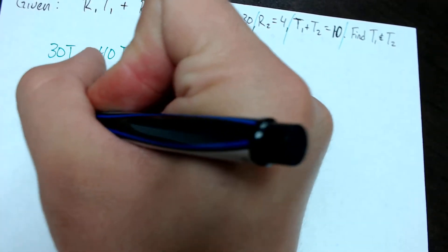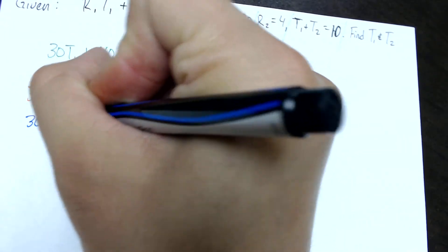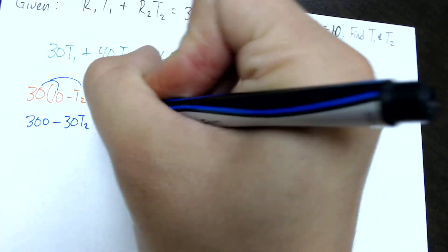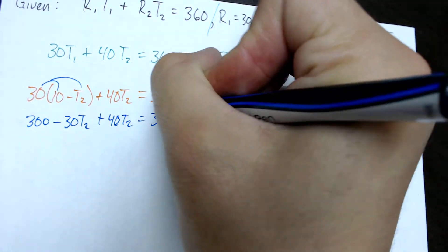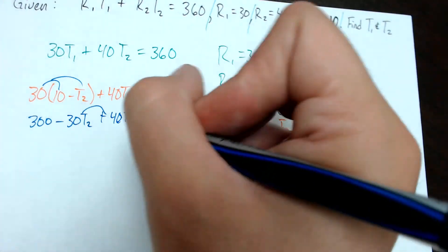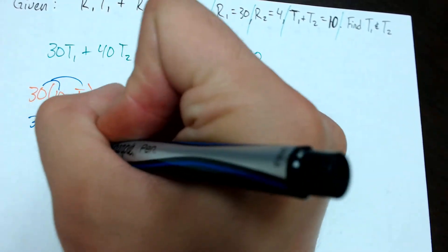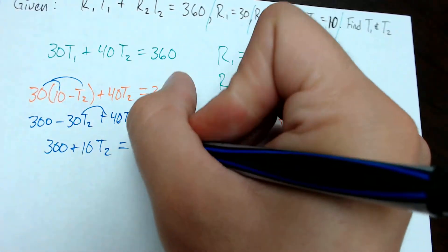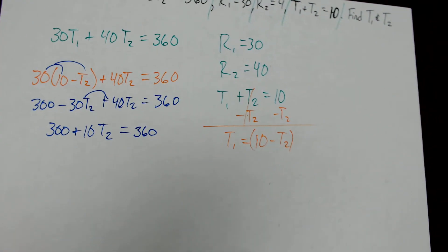30 times 10 is 300. 30 times negative T2 is minus 30T2. Then we have plus 40T2 equals 360. I can add like terms here, and those combine to become 10T2. So 300 plus 10T2 equals 360. I finish rewriting the equation and then I can start solving.